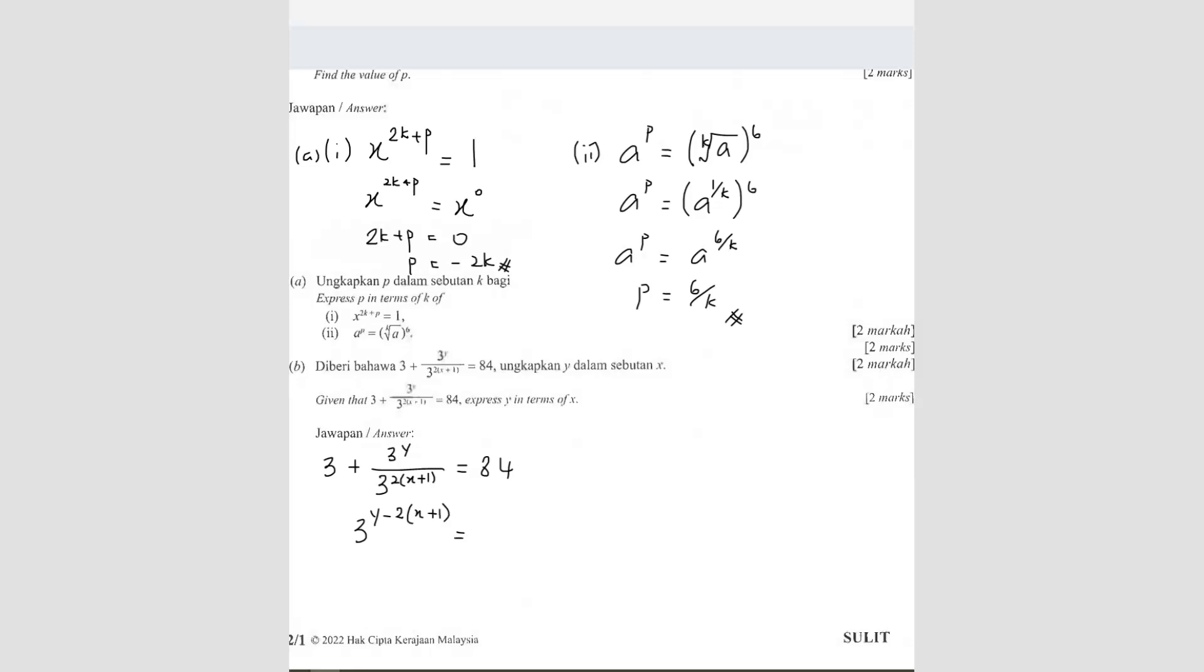equals to 84 minus 3 is 81. So you can expand the indices here. y minus 2x minus 2 equals to, so 81 is actually equals to 3 power 4, right?